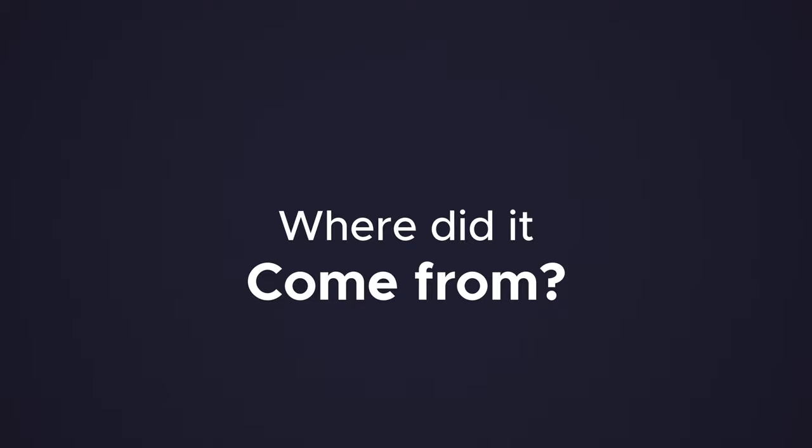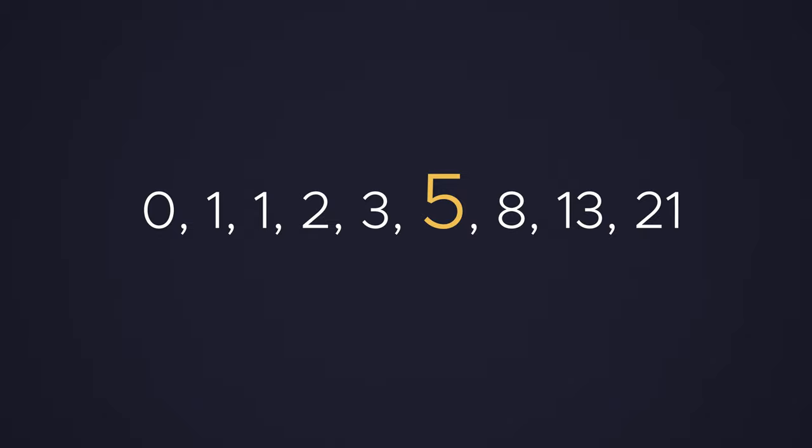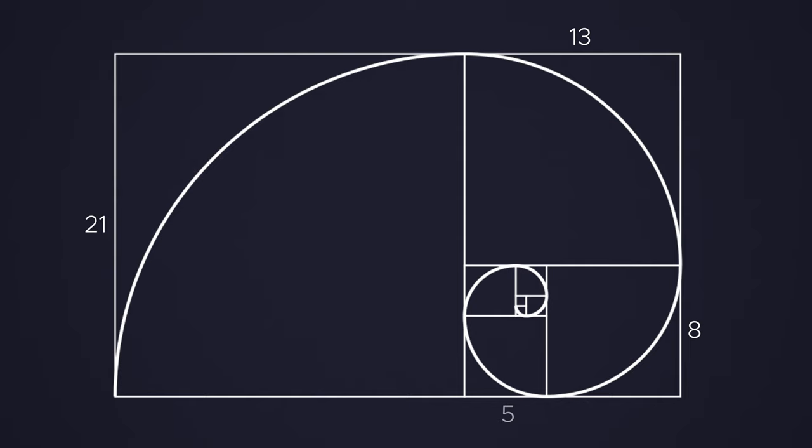The Golden Spiral comes from the Fibonacci sequence. The way that it works is that each number is the sum of the two preceding numbers, starting with 0 and 1. So 0 plus 1 would be 1, 1 plus 1 would be 2, 1 plus 2 would be 3, 2 plus 3 would be 5, and so on. By using squares whose side lengths are Fibonacci numbers and by drawing circular arcs connecting the opposite corners of the squares, we can create the Golden Spiral.